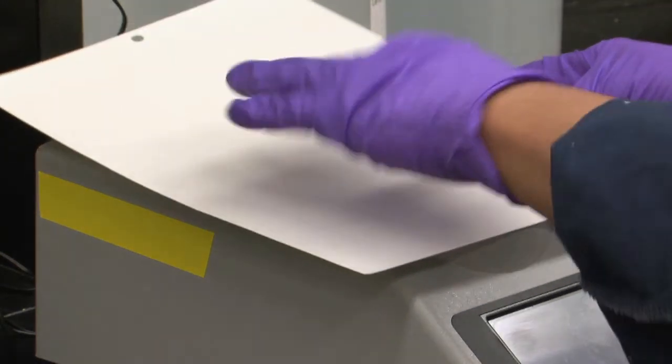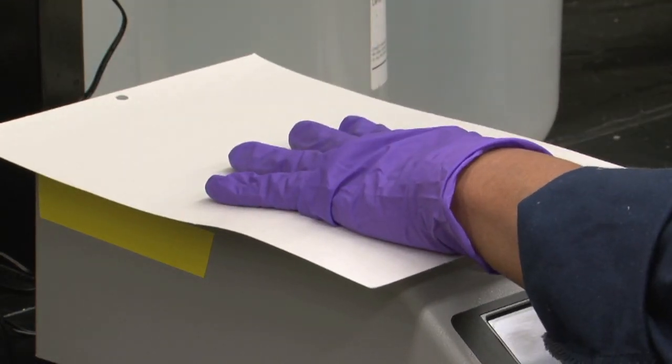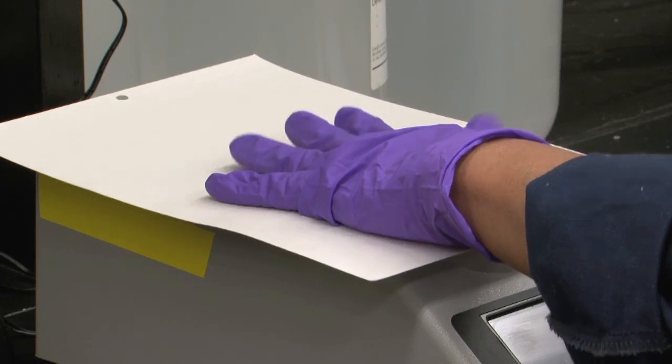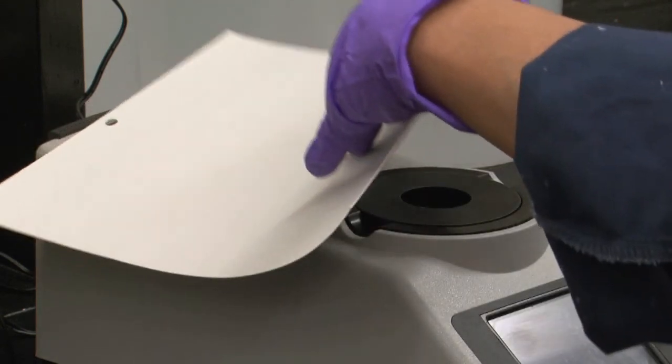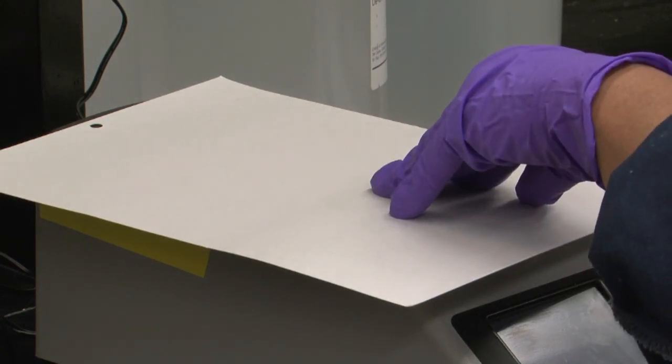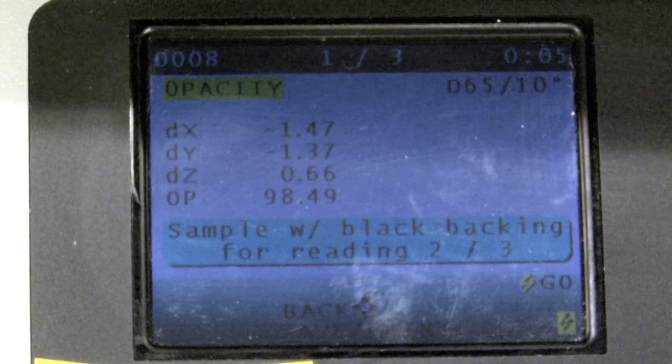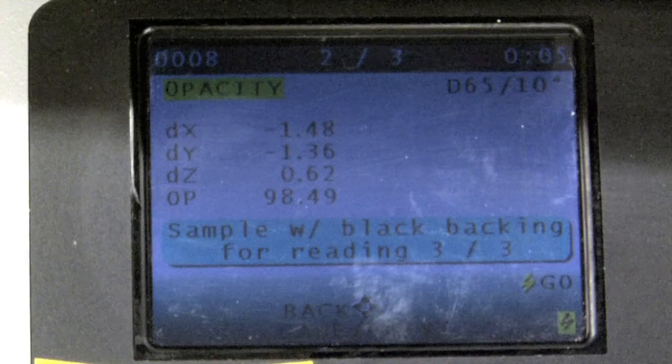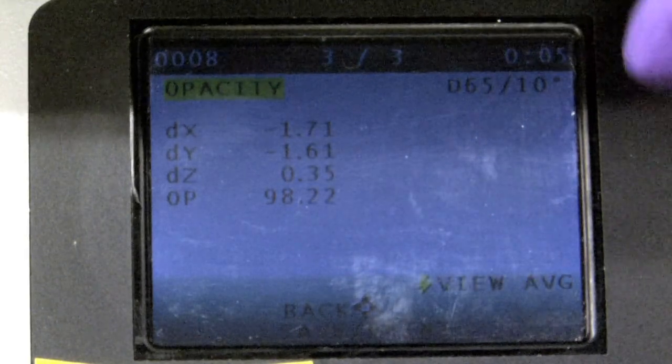We then use a tri-stimulus colorimeter to measure color difference by means of reflected light. We measure the opacity of several points across the paint, covering both the white and black areas. Then we compare the average values from both areas to find the gradient of difference between them.